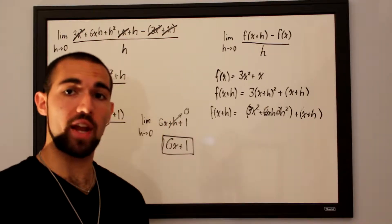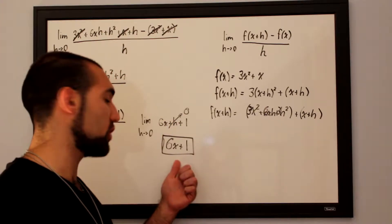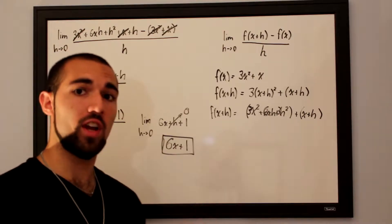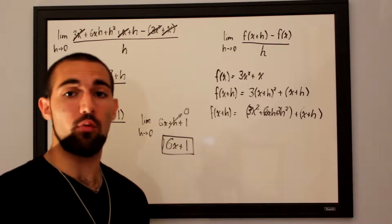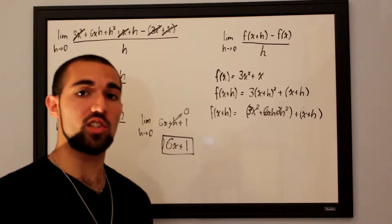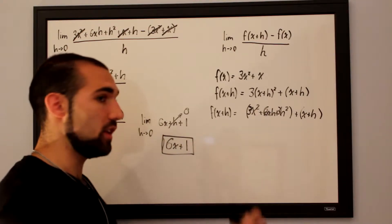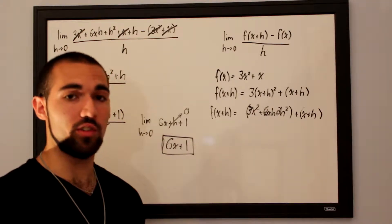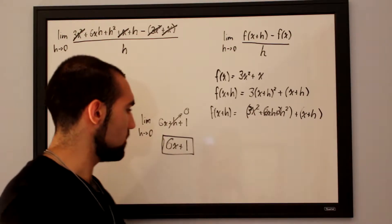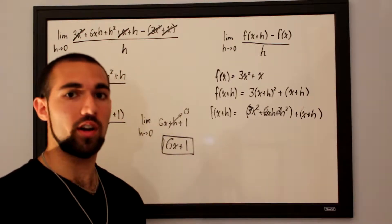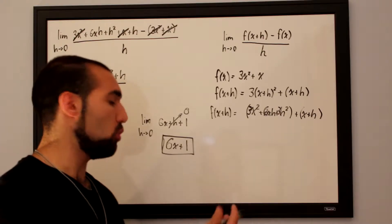The slope at any given point on that graph can be found by plugging x into this derivative function 6x plus 1. So if we wanted the slope at x equals 2, plug in 2 and the slope equals 13. If you wanted it at x equals 5, it gives you 31.